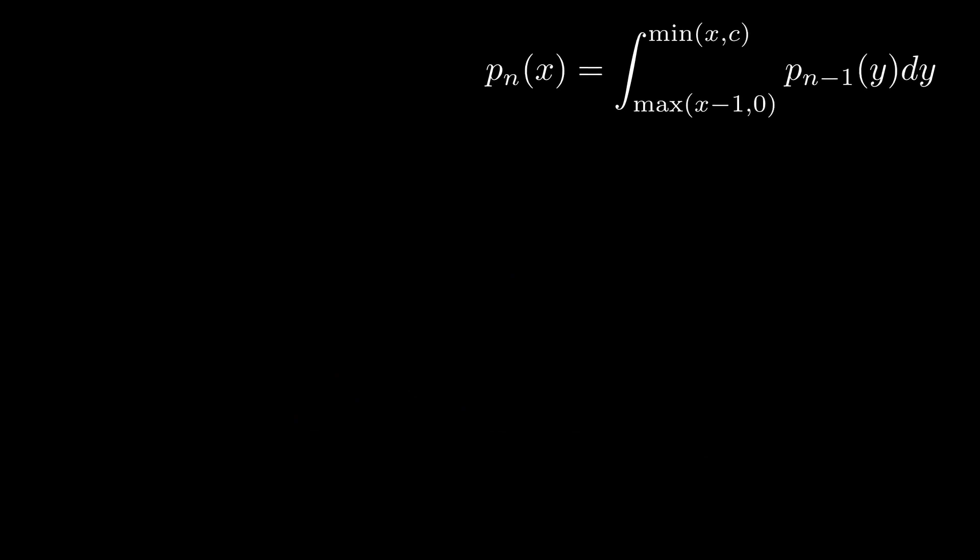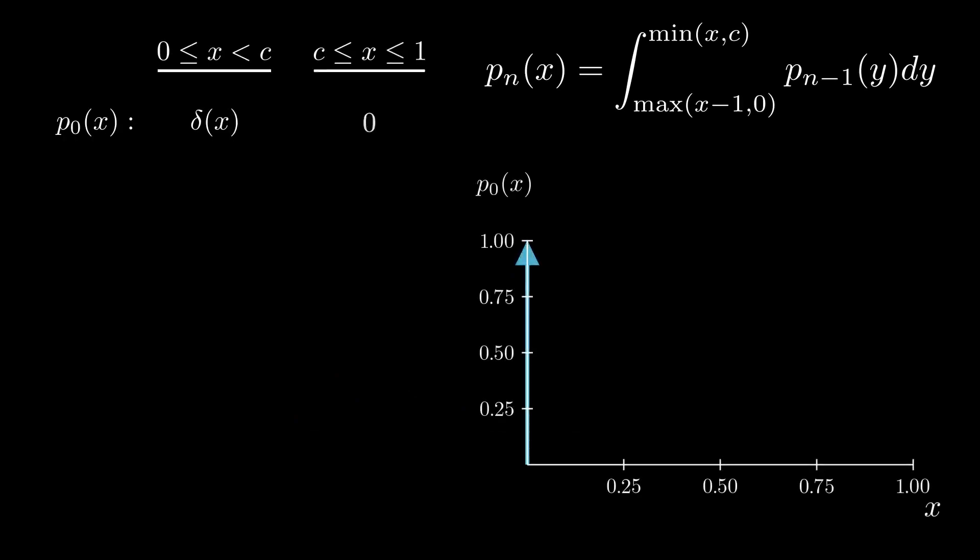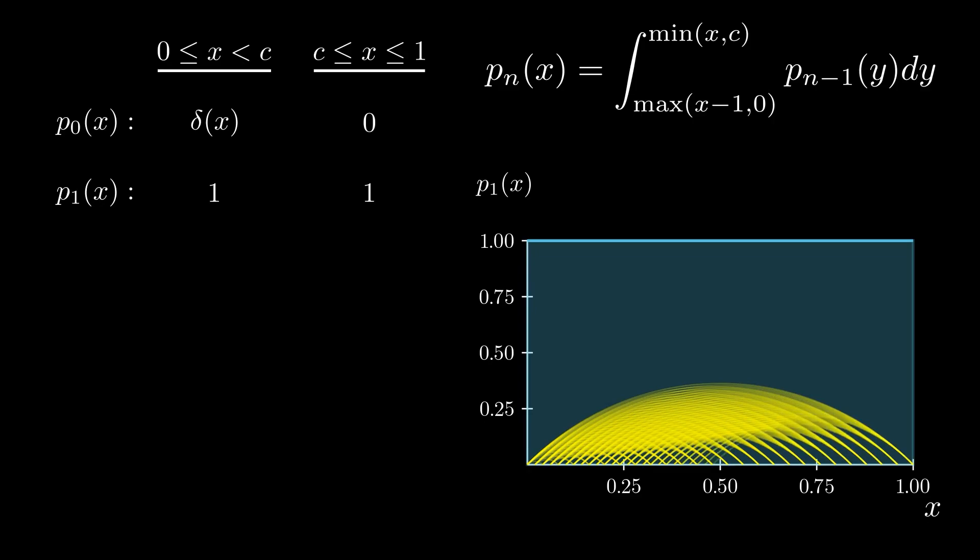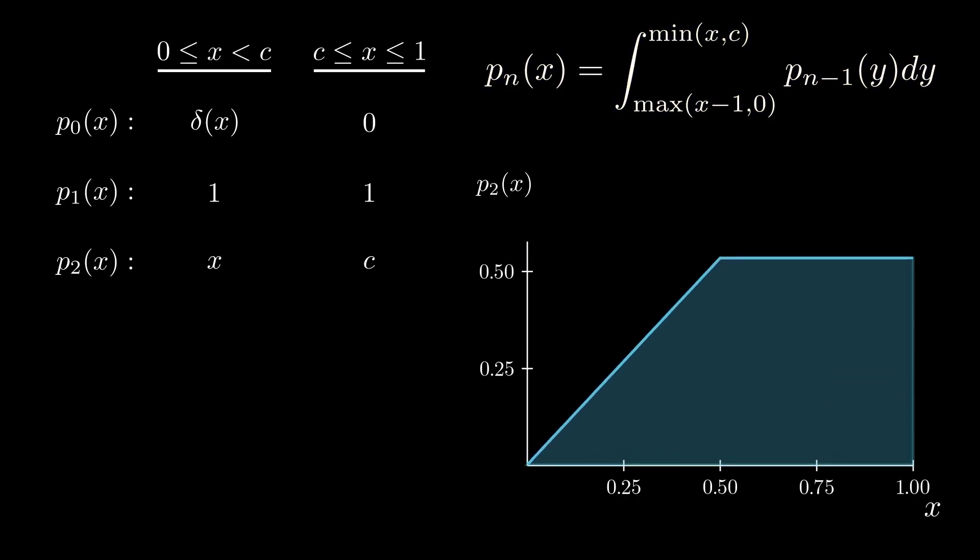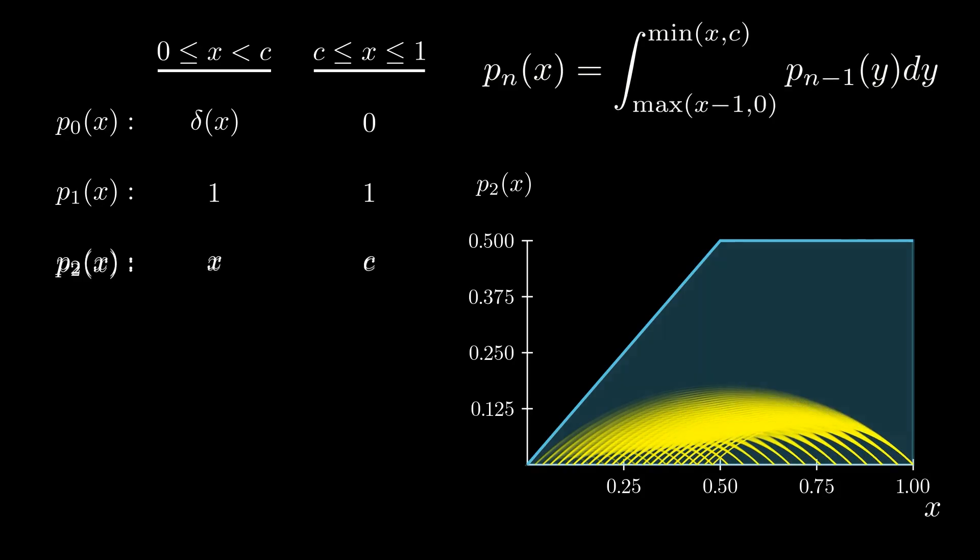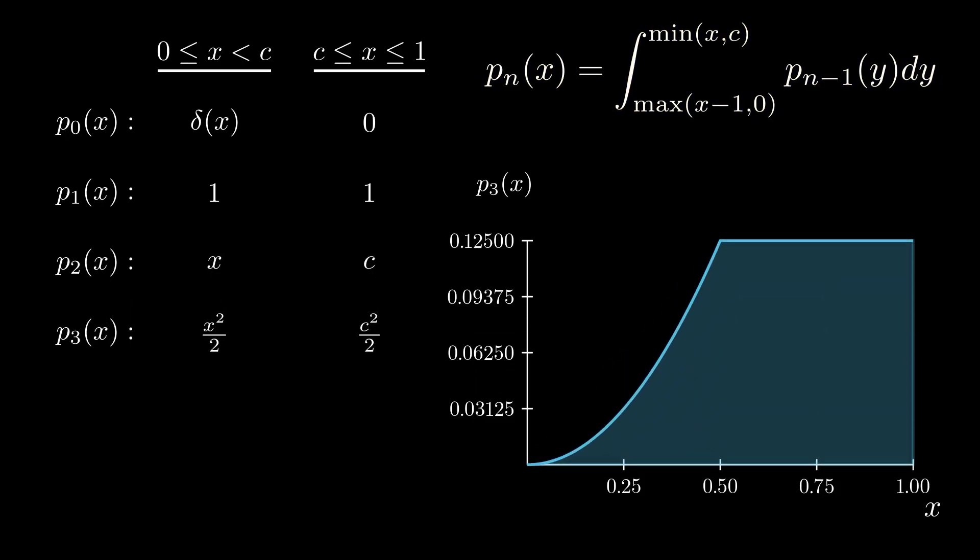To start, after zero runs, we are at x equals zero. Then, we integrate to find the distribution after one run. With each subsequent run, the total probability that we haven't jumped or faulted decreases, and the distribution becomes more concentrated near and above the cutoff.